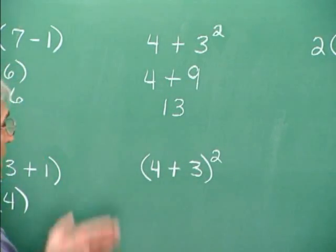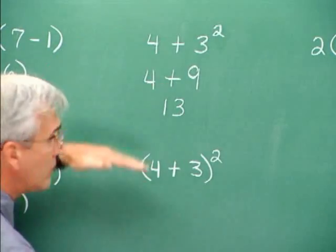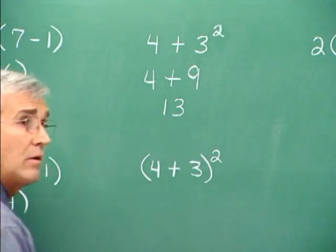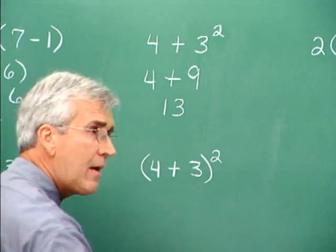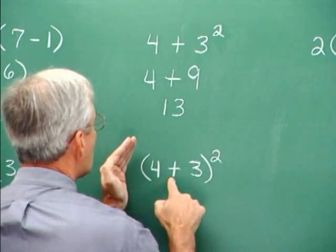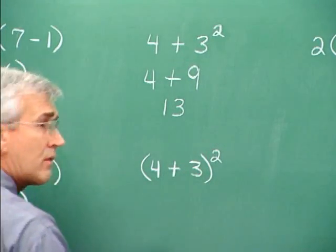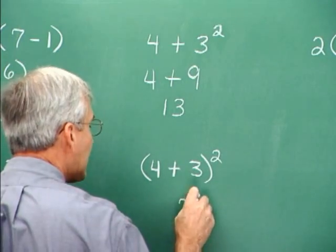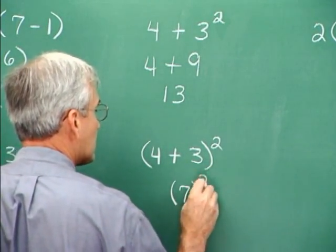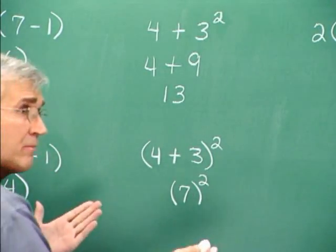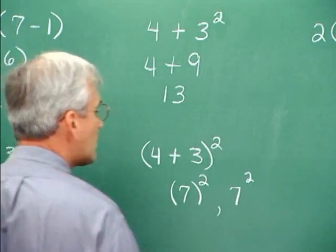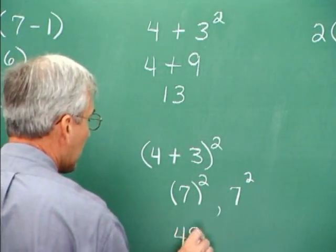In this one, we have parentheses. Now notice the similarity between these two. We have 4 plus 3 and we have squared. We have 4 plus 3 and we also have squared. But we have a parenthesis in here, and it changes the dynamic of the problem altogether. This says to work in the parenthesis first. So we do collect the 4 and the 3, you see, to get 7. Now I can keep the parenthesis or not keep it. If there's only one term within the parenthesis, it means the same thing whether you keep the parenthesis or not. 7 squared written like this and 7 squared written like this mean exactly the same thing. Either way you cook it, we're going to get 49.